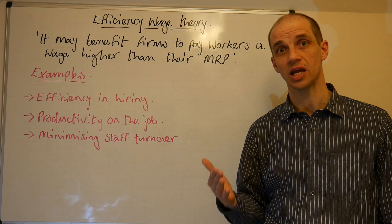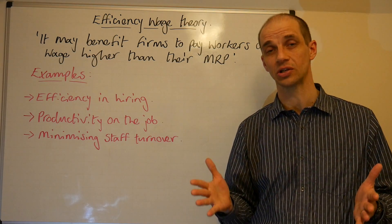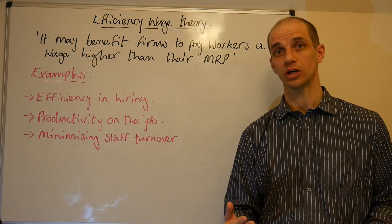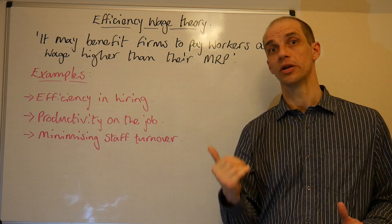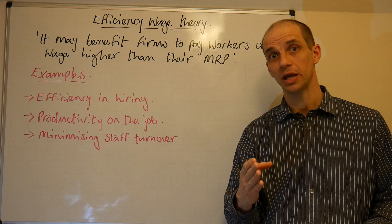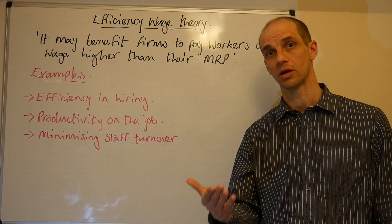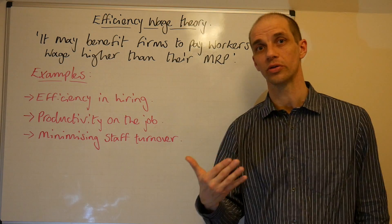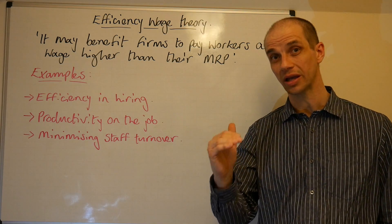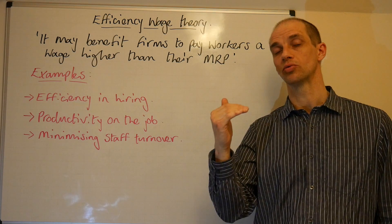The first one is about efficiency in hiring. If you think about ensuring that you are attracting the very best staff to your particular firm, you may well choose to offer a high wage rate beyond the given average marginal revenue product, because you want to ensure you attract the best staff. Those best staff are likely to know how productive they are and how hard they work. As a consequence, their reservation wage — i.e. the lowest wage they're prepared to work at — may be higher than the average person. Thus, you would pay above the average marginal revenue product.